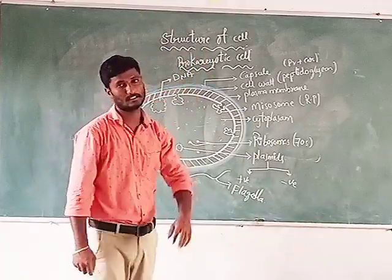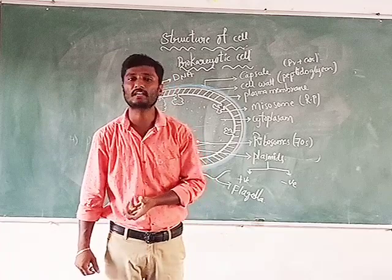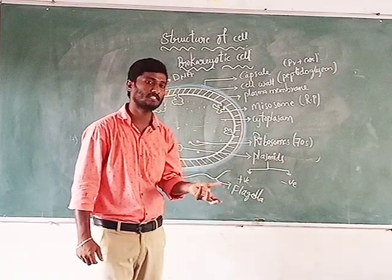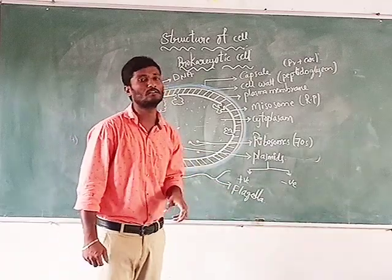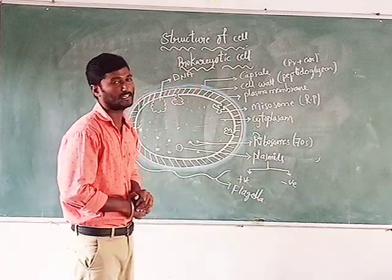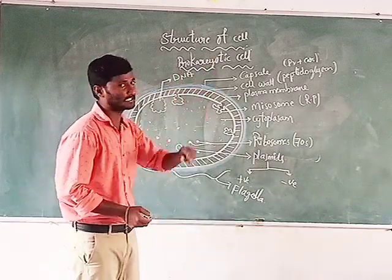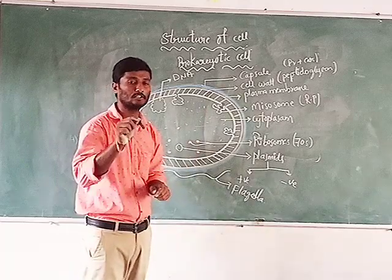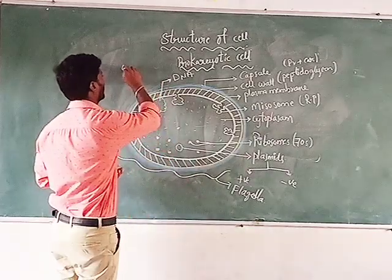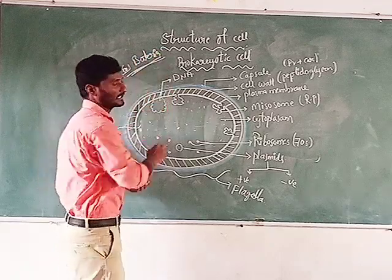Now we will discuss the structure of the prokaryotic cell. Based on the nucleus, we divided cells into prokaryotic and eukaryotic. The prokaryotic cell has no nucleus. Example: bacteria. The bacteria structure is studied as an example of a prokaryotic cell structure. The organism body is totally covered by one layer — the plasma membrane. Above the surface of the plasma membrane, one more thick layer is present called the cell wall. The cell wall is made up of peptidoglycan substance.